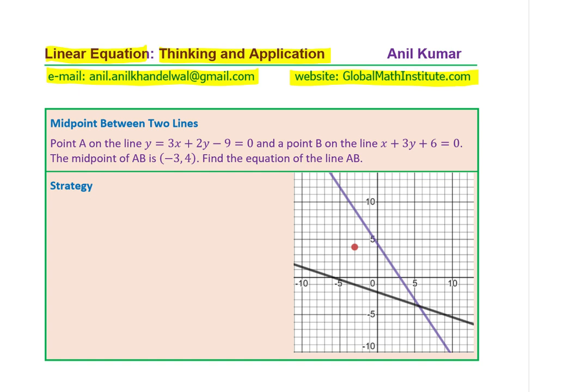We will discuss midpoint between two lines and here is a related question which is kind of difficult. Let us see how to solve such a question. Point A is on the line 3x plus 2y minus 9 equals 0, and point B